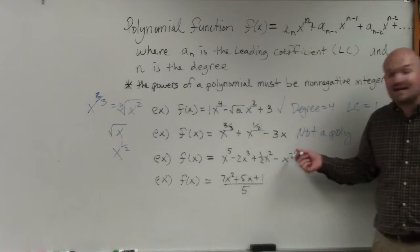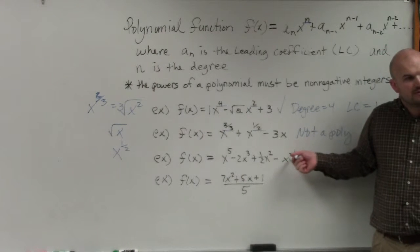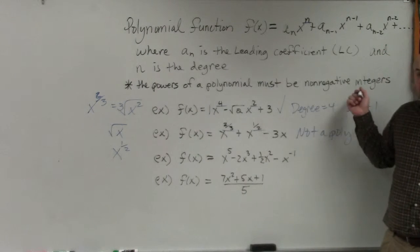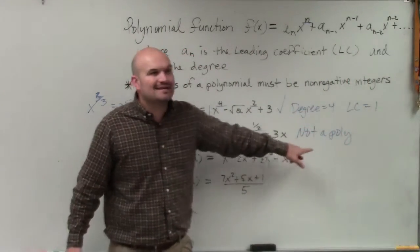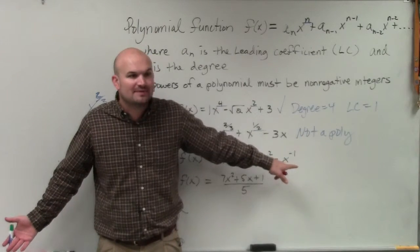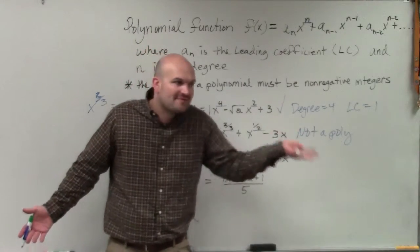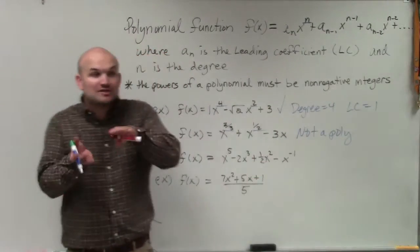The next one, you can't have any negative powers. Because basically, you can't have any non-negative integers as your powers, or you can't have variables in the denominator. Because what is x to the negative first? What is that really? That's the same thing as 1 over x. You can't have x in the denominator.